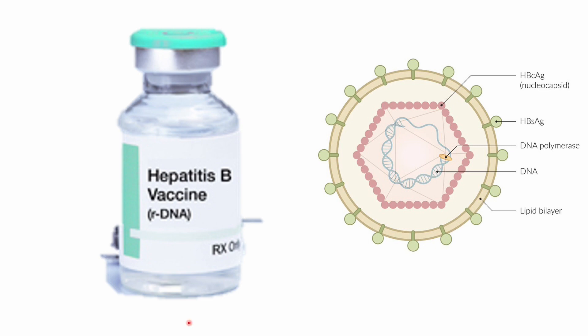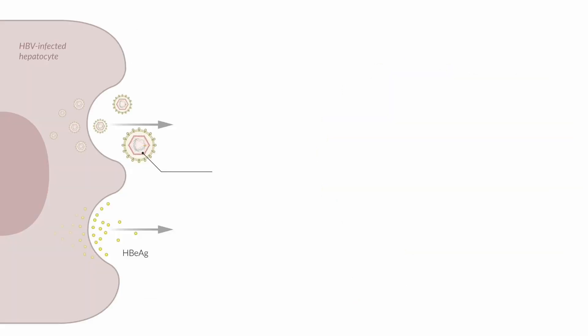The first thing to know is that the hepatitis B vaccine contains the hepatitis B surface antigen — that's the virus component in the vaccine. Therefore, you should expect the antibody response to be in the form of hepatitis B surface antibody. The only way uninfected people are exposed to hepatitis B is through this surface antigen in the vaccine, so the only thing we'll have in our blood is the surface antibody.